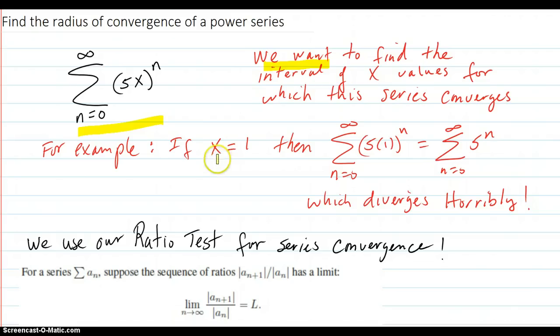For example, for an x value of 1, if you put that in there for x, you're going to get 5 to the n power, and so that series diverges horribly. So x equals 1 is not going to be a value that makes the series converge.